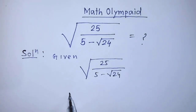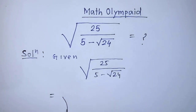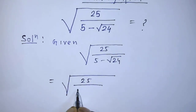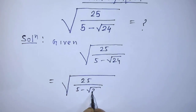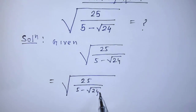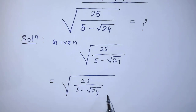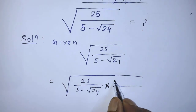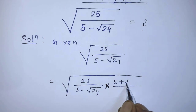In the first step of the solution, we have square root of 25 over 5 minus square root of 24. According to rationalizing the denominator, we have to multiply the numerator and denominator by 5 plus square root of 24.